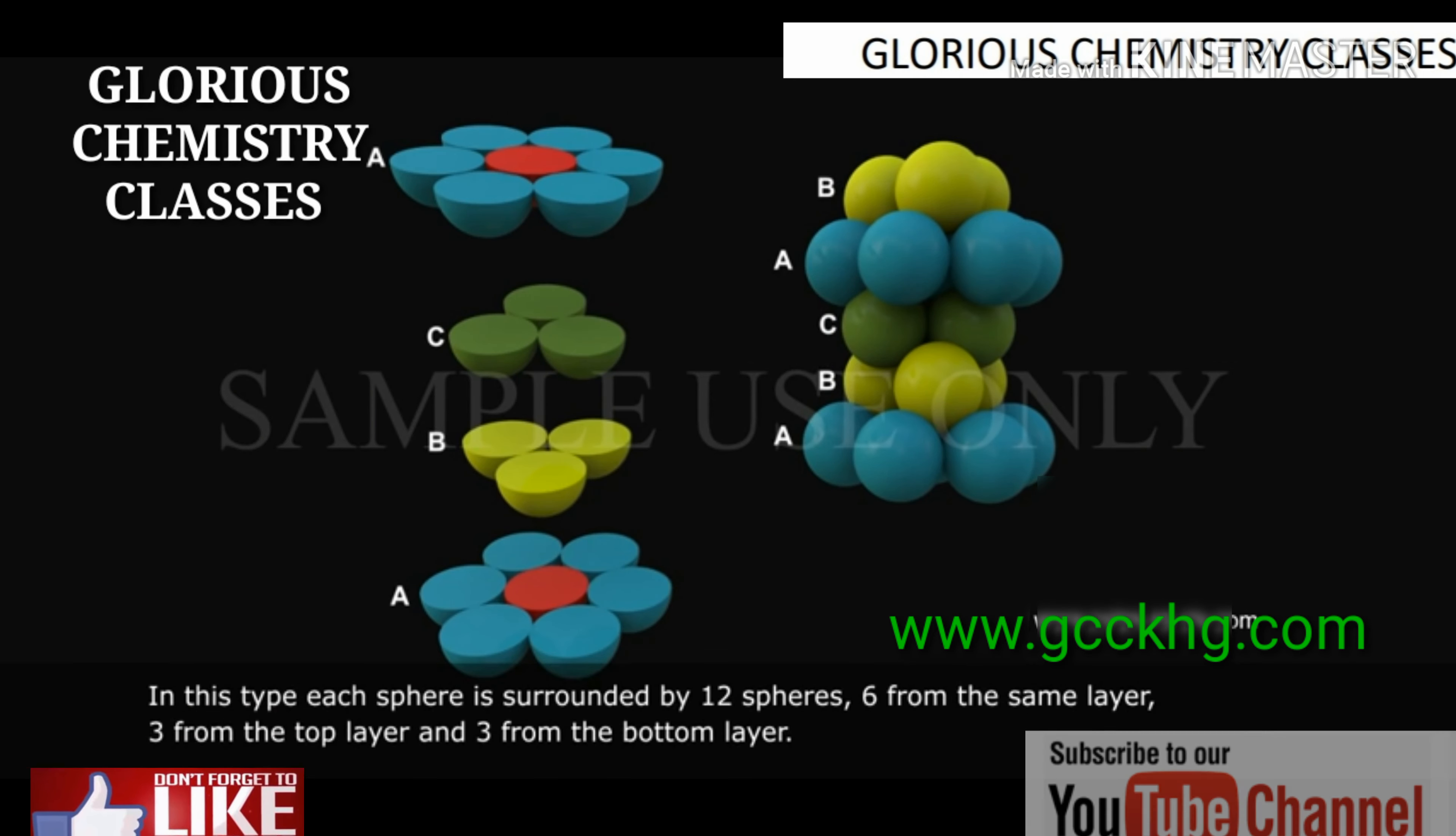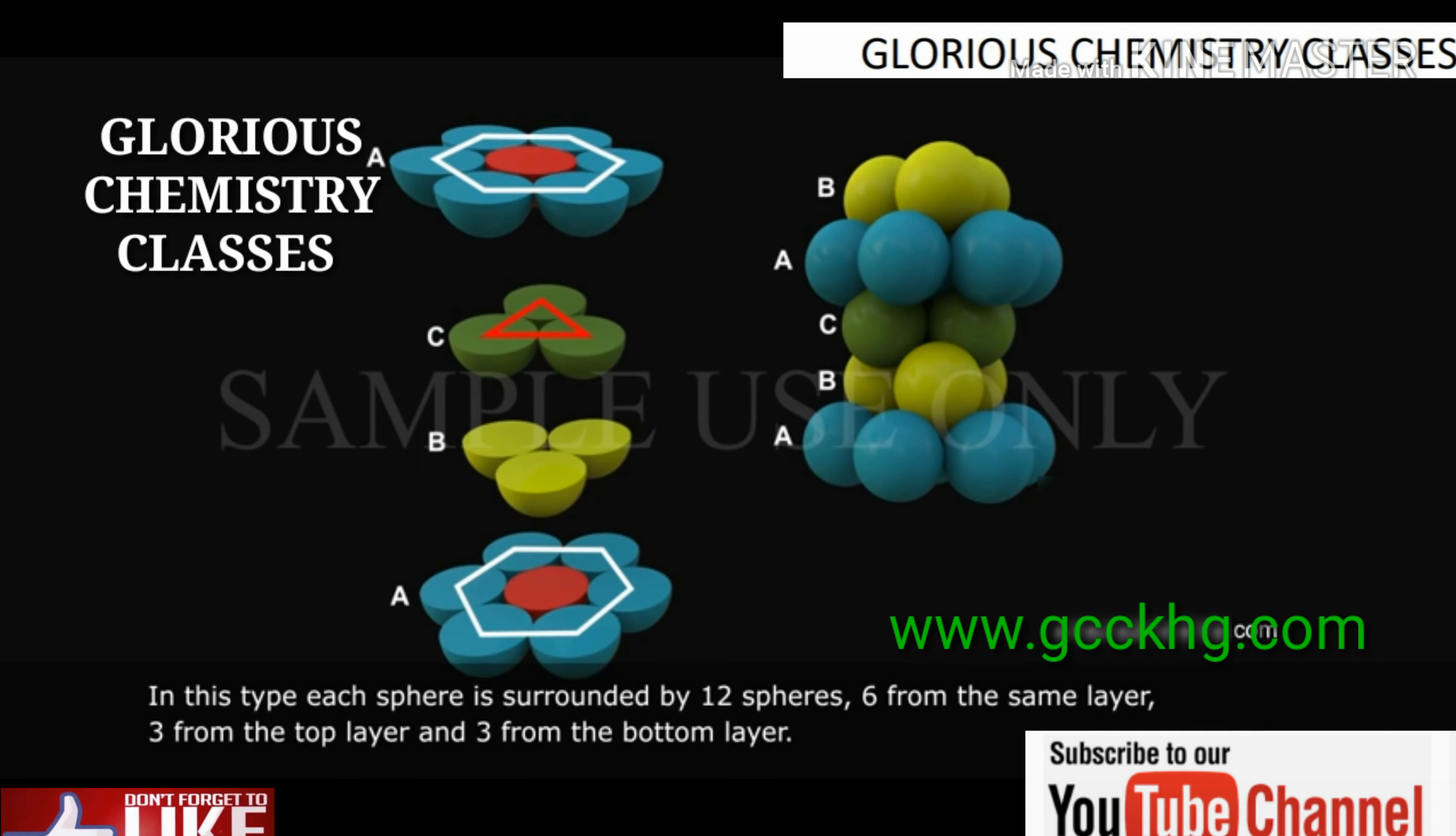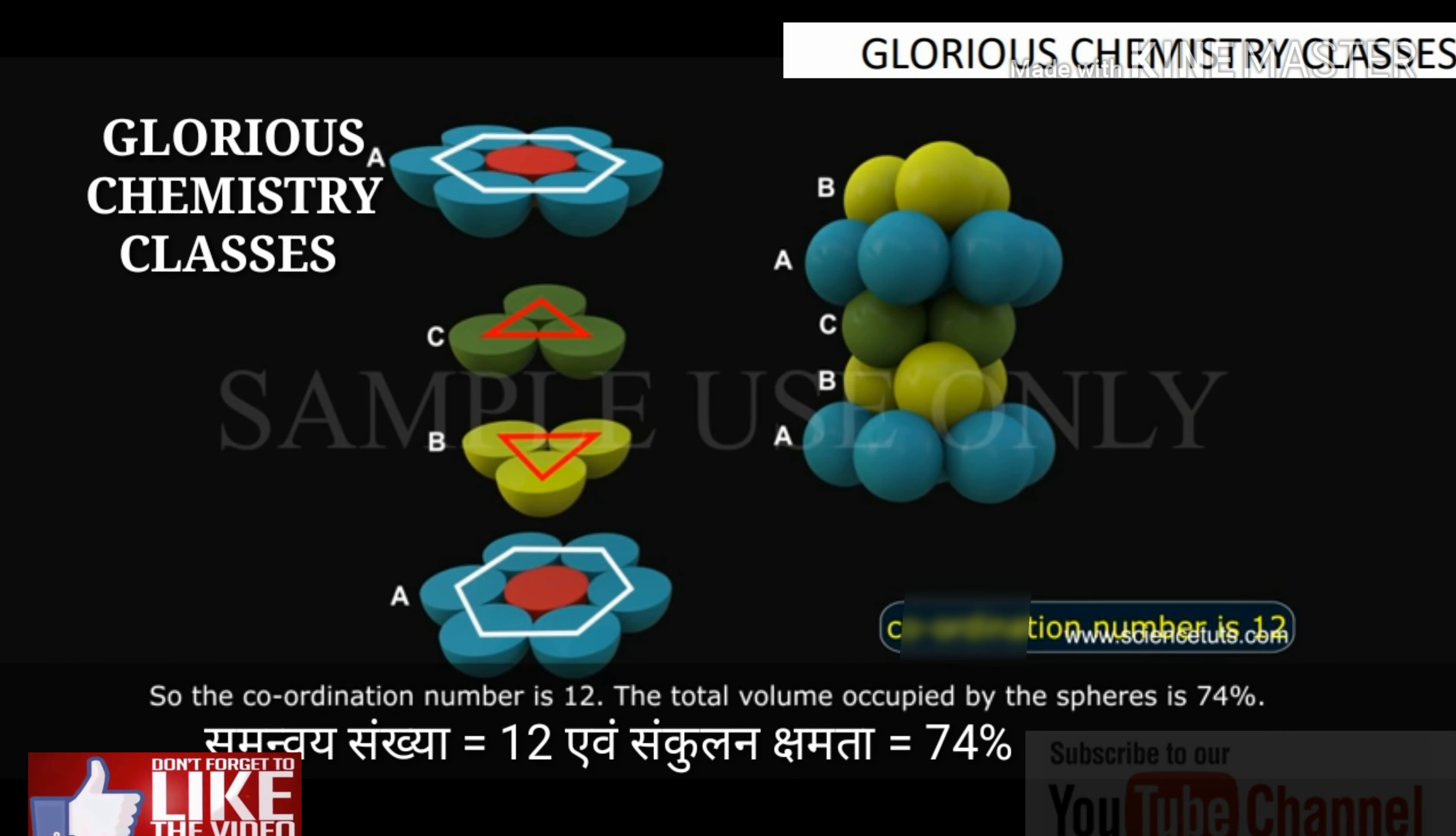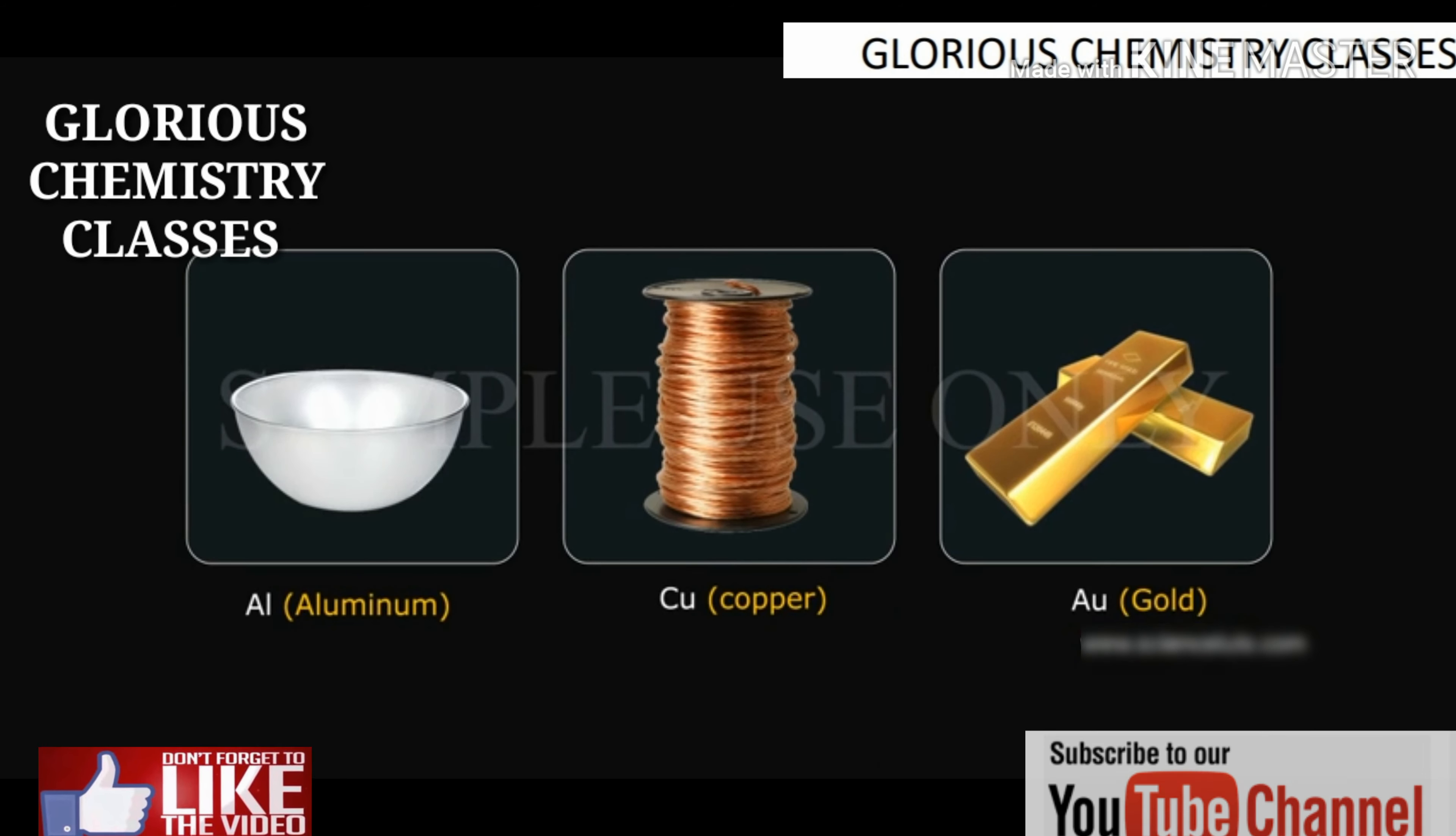In this type, each sphere is surrounded by 12 spheres: 6 from the same layer, 3 from the top layer, and 3 from the bottom layer. So the coordination number is 12. The total volume occupied by the spheres is 74%.